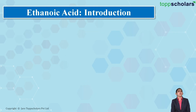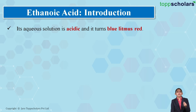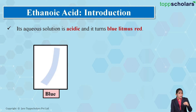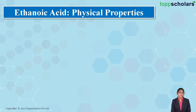If we talk about ethanoic acid, the aqueous solution is acidic in nature. If you take a blue litmus paper and dip it in the aqueous solution of ethanoic acid, you will find that the blue litmus paper turns red, which means that the aqueous solution of ethanoic acid is acidic.